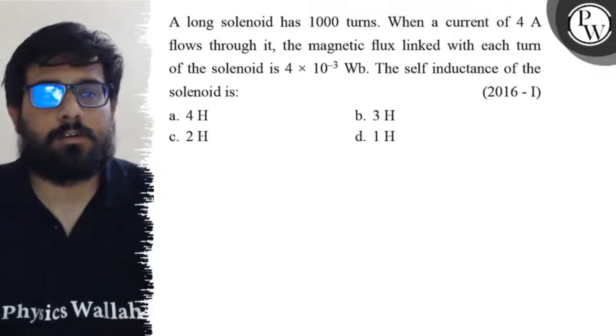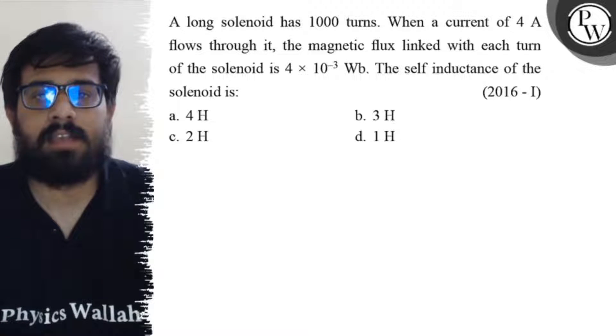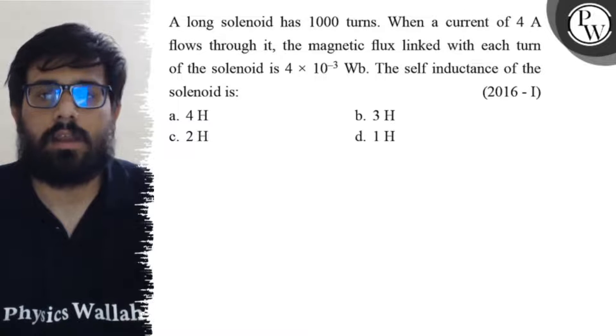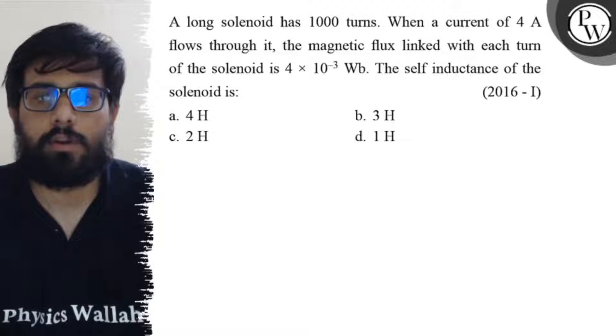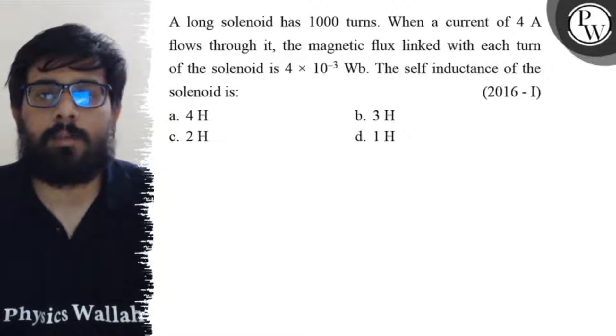Hello students, let's see the question. A long solenoid has 1000 turns. When a current of 4 ampere flows through it, the magnetic flux linked with each turn of the solenoid is 4 × 10^-3 weber.